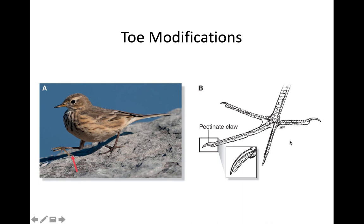There are interesting modifications of toes, including anisodactyl, heterodactyl, and zygodactyl feet and different webbing or lobate patterns. Another modification is some birds having what are called pectinate claws — pectinate meaning comb — which are basically little combs they can use when preening to scratch through their feathers and get rid of parasites and debris.